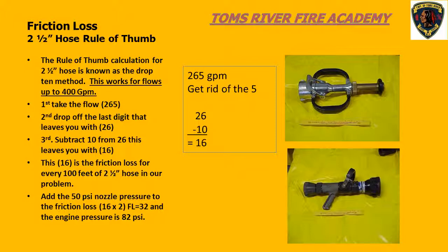Now we just add the nozzle pressure and friction loss together to get the required engine pump pressure. In this case, we have 200 feet of hose, so there is 16 PSI of friction loss in the first 100 feet and 16 PSI friction loss in the second 100 feet. That gives us a total friction loss of 32 PSI. Add the 32 PSI friction loss to the 50 PSI nozzle pressure and the result is a required engine pump pressure of 82 PSI.